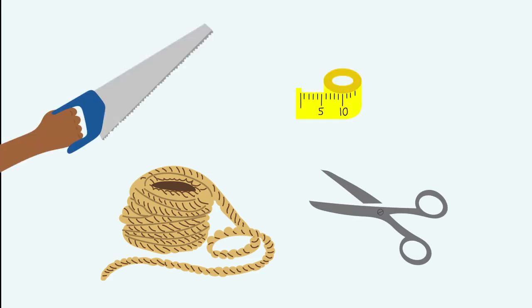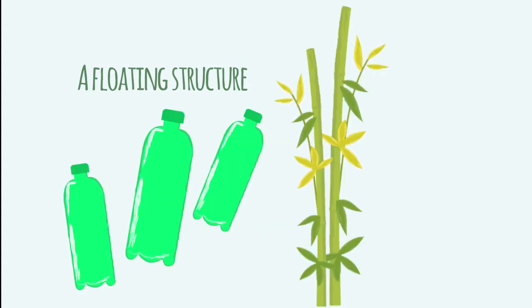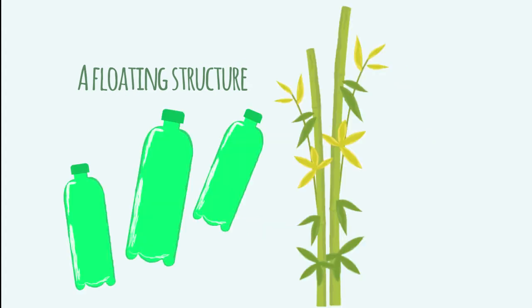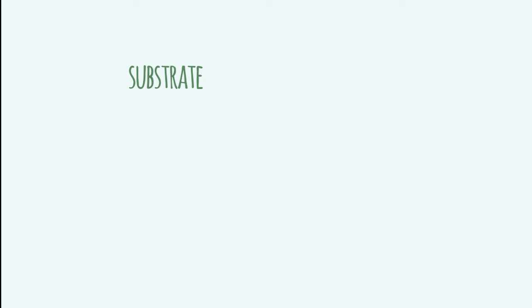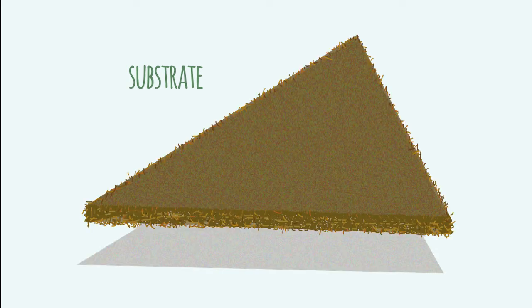It is an accessible technology that can be replicated with simple tools. The floating garden consists of a few elements: a floating structure made from materials such as bamboo or pet bottle, a substrate which will serve as a base for the roots of the plants made of materials such as wood shavings or natural fibers, and a net to keep the substrates together.